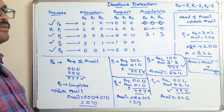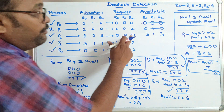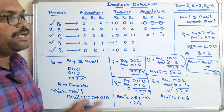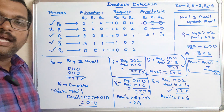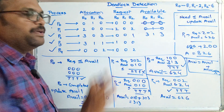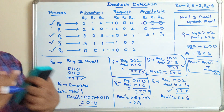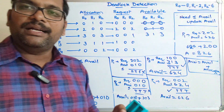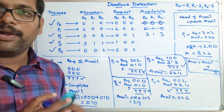So when P2's request was 0,0,1 we got a deadlock (unsafe state), but when it is 0,0,0 we get a safe state. This is how the banker's algorithm is used for both deadlock detection and deadlock avoidance.